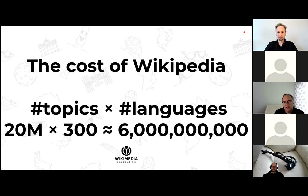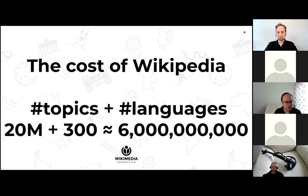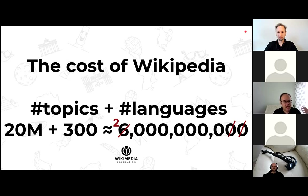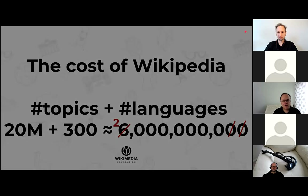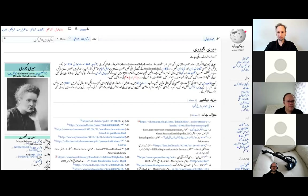The real problem is that the inherent cost of Wikipedia is the number of topics times the number of languages, because all articles in different language editions are completely independent — information corrected in one doesn't transfer to another. The question is: can we turn this multiplication into an addition? Can we create an architecture where we decouple the costs — create the topics once, create the languages once — and reduce the cost of Wikipedia by two orders of magnitude?